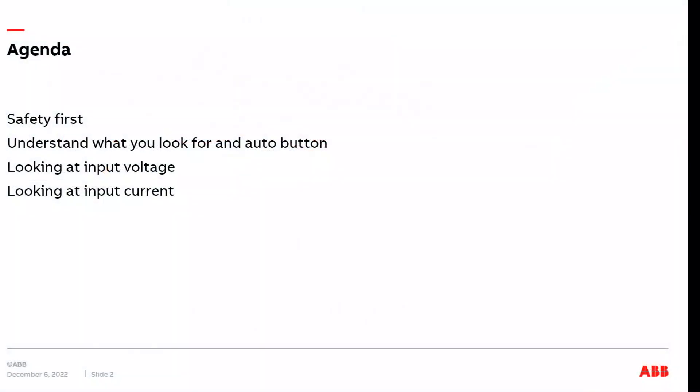In this presentation, we're going to use a scope and look at the input voltage and current waveforms. We're going to start out first with a safety moment. We're then going to talk briefly about making sure you understand what type of signal you're looking for when using an oscilloscope and also relying on the auto button and getting the signal on the screen. And then we're going to dive in and look at sample input voltage and current waveforms on the scope.